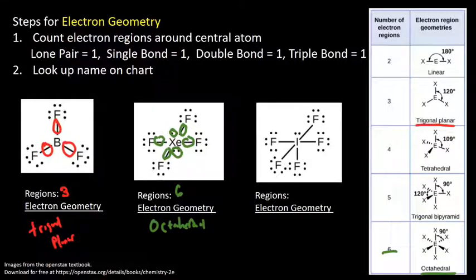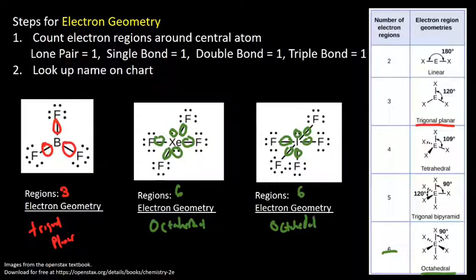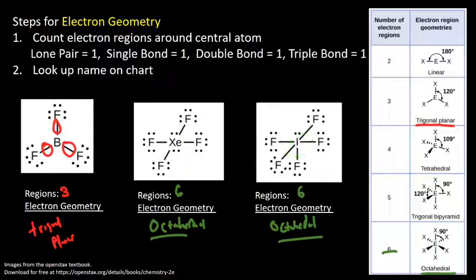Lastly for electron geometry, IF5. Count the regions: one, two, three, four, five, six — six regions, also octahedral. So that's electron geometry. Now what we're going to do is work on molecular geometry. What we add here is counting lone pairs, and we also add a huge variety in the different types of shapes. Both XeF4 and IF5 are octahedral in their electron geometry, but they clearly have different shapes because one has four atoms bonded and the other has five. So these have the same electron geometry but different molecular geometry, because their molecules look different.